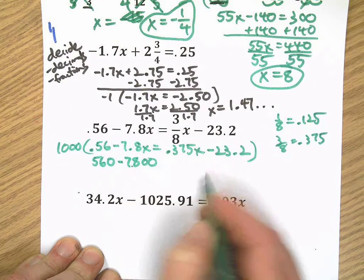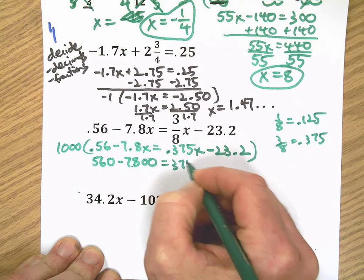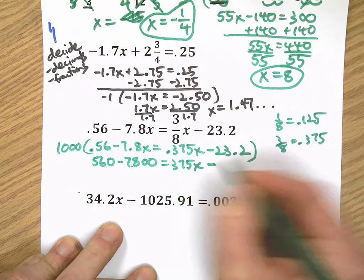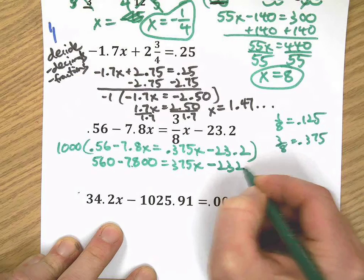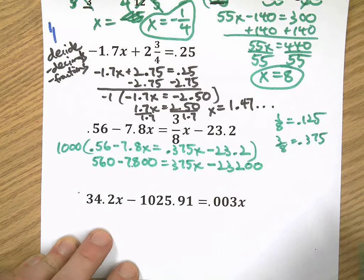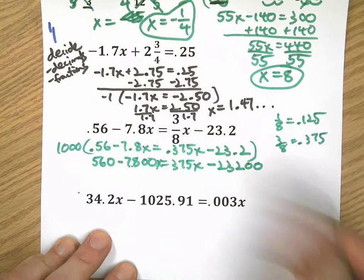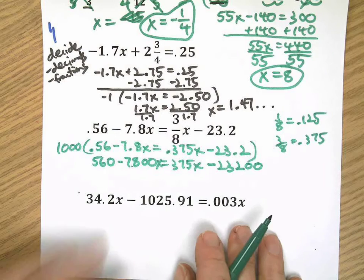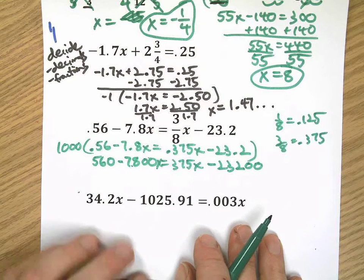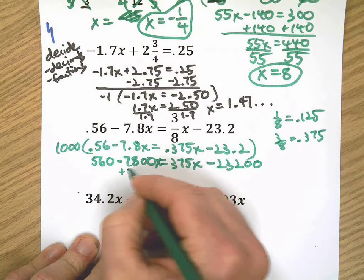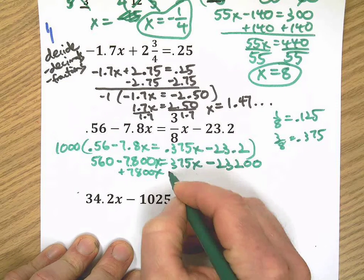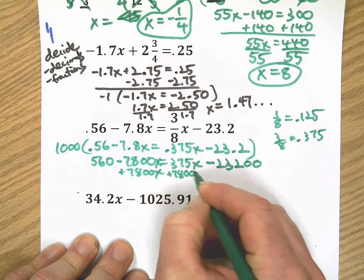The decimal got moved three spots, three spots there, and one two three spots there. And that's an x, thanks for catching that, appreciate it. Now I'm going to add 7800x to both sides.